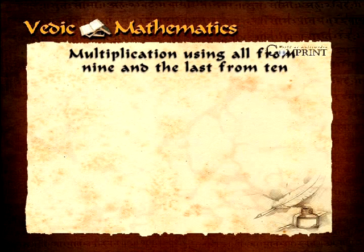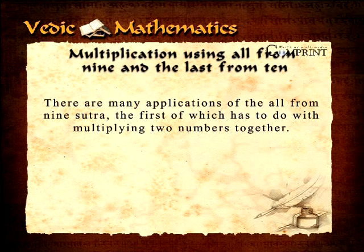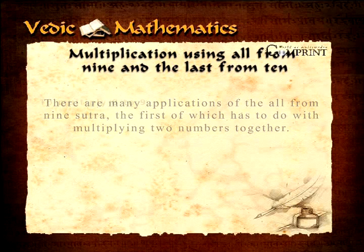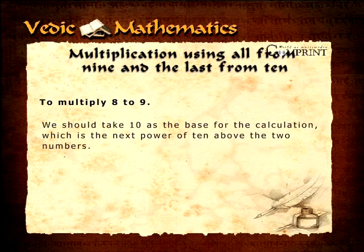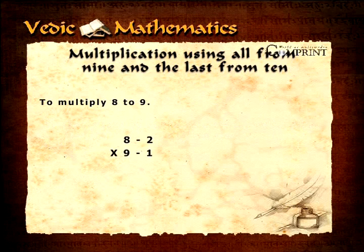Multiplication using all from nine and the last from ten. There are many applications of the all from nine sutra, the first of which has to do with multiplying two numbers together. Suppose we have to multiply eight by nine — we should take ten as the base for the calculation, which is the next power of ten above the two numbers.